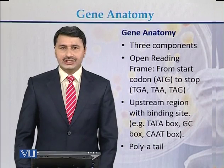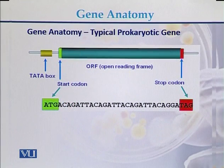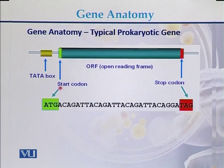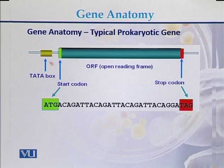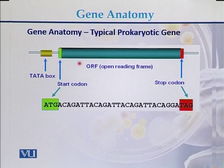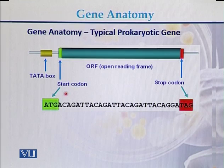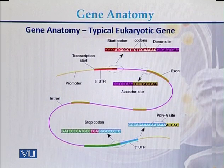This is the gene anatomy of a typical prokaryotic gene. We can see the open reading frame that starts with the start codon ATG and ends with the stop codon TAG. In addition to the open reading frame, there is a promoter region where there is a TATA box. So the structure of a typical prokaryotic gene includes an open reading frame, a start codon, a stop codon, and promoter regions.